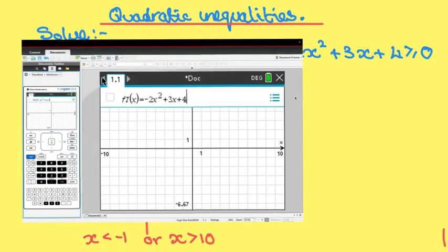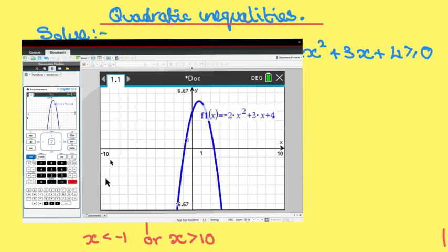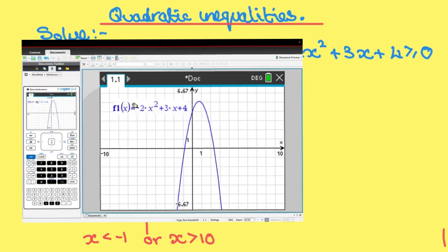The first thing you need to do is open your GDC at a graphs page. Type in your quadratic, which I've already done for speed. Press enter. There is your quadratic.